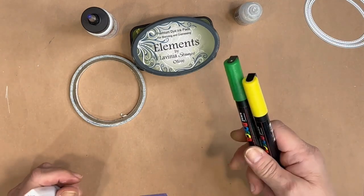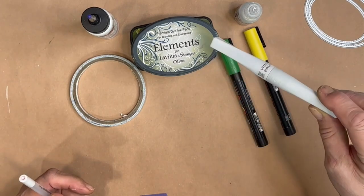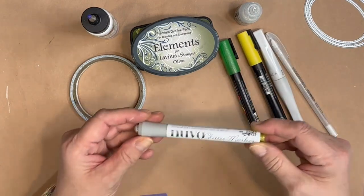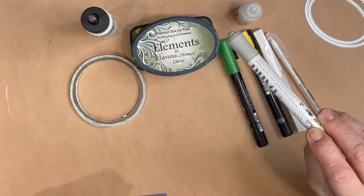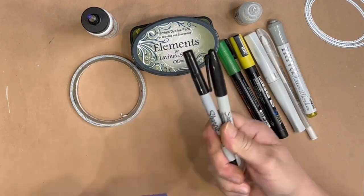I will be using Posca Pens in Green and Yellow, Clear Wink of Stella, a White Gel Pen, a Nouveau Glitter Marker in Lemon Drizzle, and I will have my Sharpies on hand.